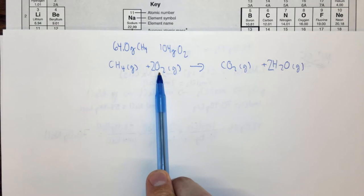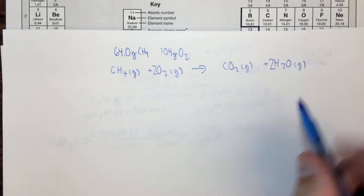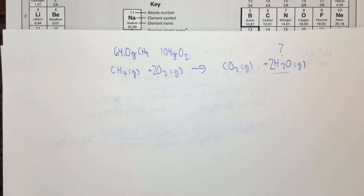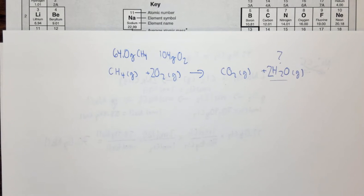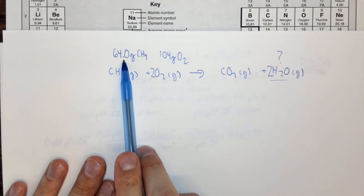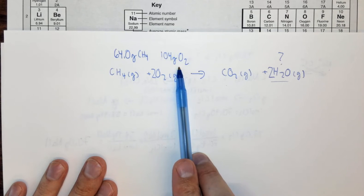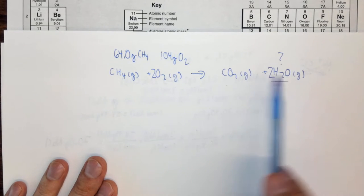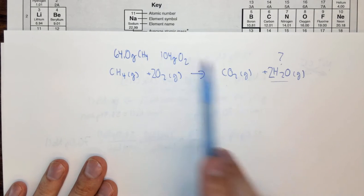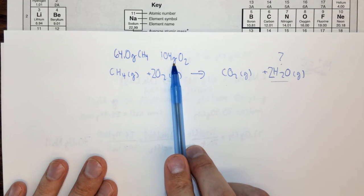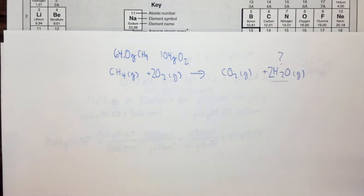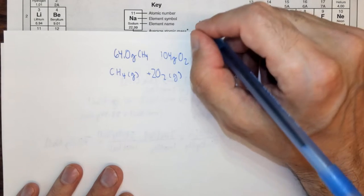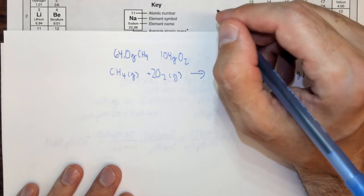What we want to know is how much water we can make. Just like the grilled cheese sandwich example — where we had to figure out if we were running out of cheese or bread — we need to figure out whether we'll run out of methane or oxygen first. To do that, we calculate how much water we can make with all of our methane, and how much water we can make with all of our oxygen. Whichever amount is less, that reactant is the limiting reagent.